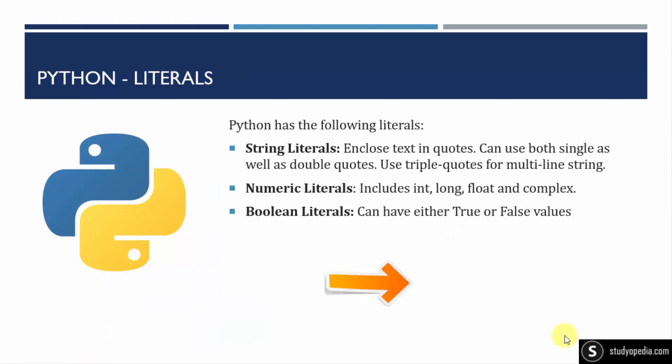Python literals — you can define a literal as data in a variable or constant. Python has the following literals: string, numeric, and boolean. You can create a string using single or double quotes; for multi-line strings, use triple quotes. Numeric literals include integer, float, and complex. Boolean literals always have two values: true or false.